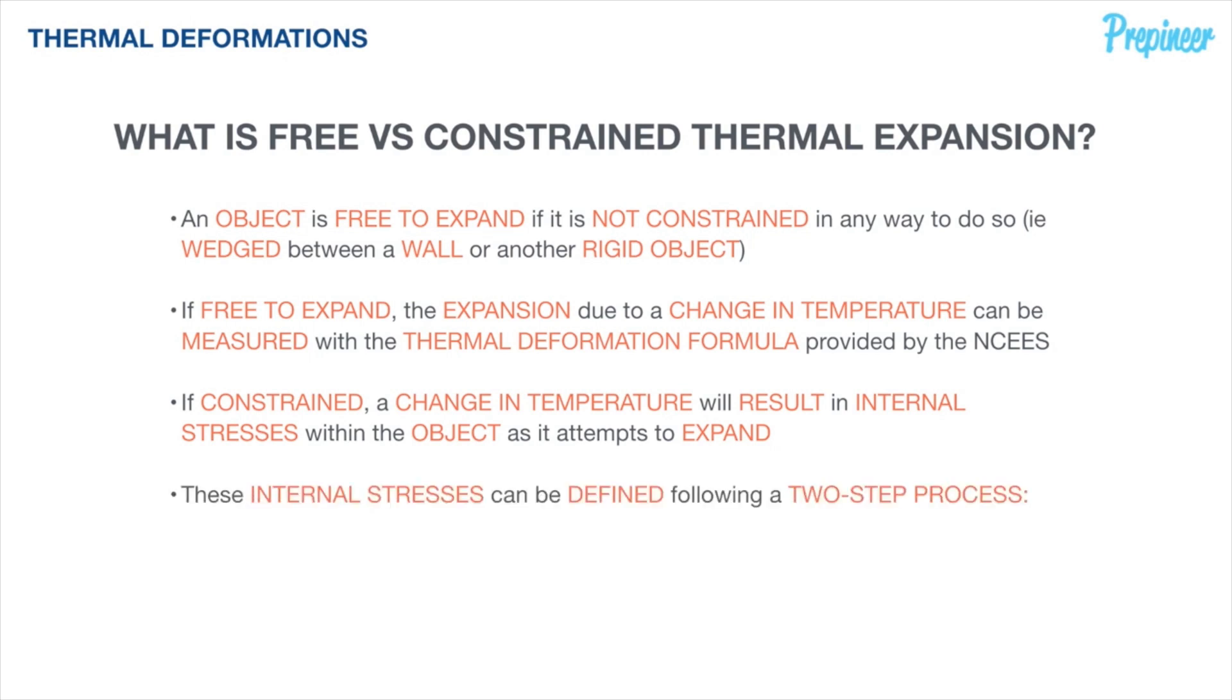We will illustrate this in later examples, but essentially the stress can be calculated using a two-step process. First, we will determine the expansion that would occur if the body were free to expand. And then second, we will determine the stress that would occur if we completely prevented that free expansion from occurring. Essentially we would reduce the change in length down to zero, which naturally will create those internal stresses. We will use the stress-strain relationships, Hooke's law, that we defined in the previous session, which is characterized by the Young's modulus or the modulus of elasticity.